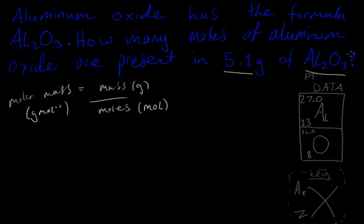Let's find the relative formula mass of Al₂O₃ so we can eventually find the molar mass. We need to add up the relative atomic masses from each of the atoms in this molecule. For Al₂O₃, we've got two atoms of aluminum, so we multiply 27.0 times 2.